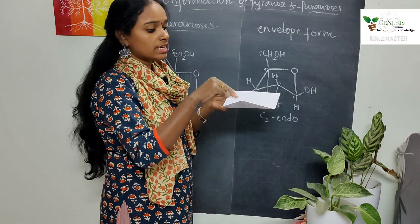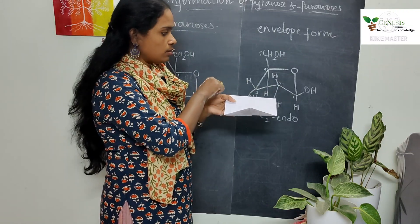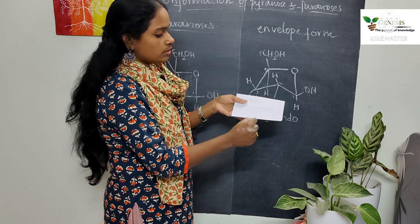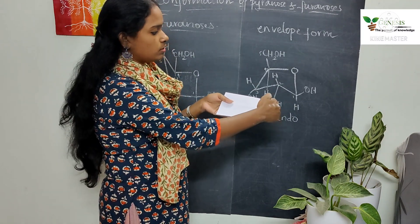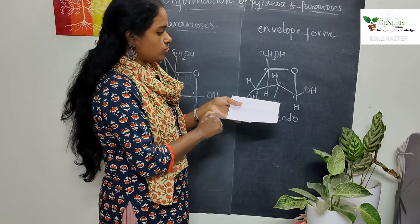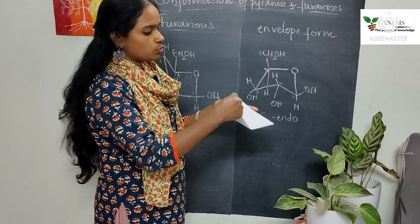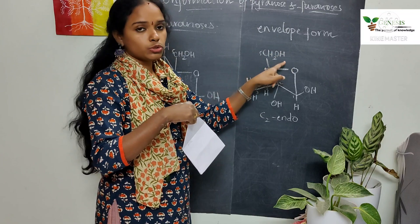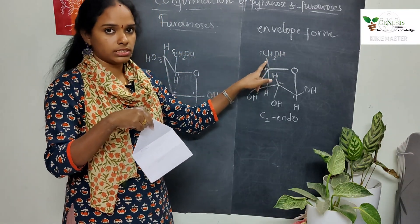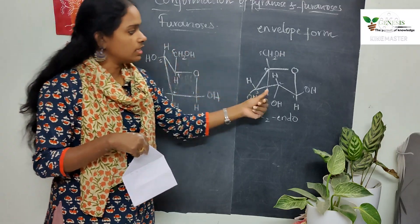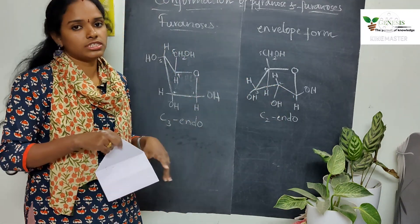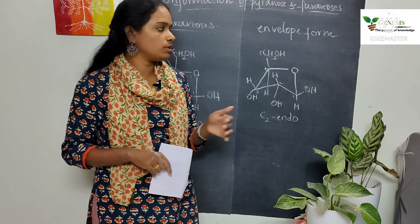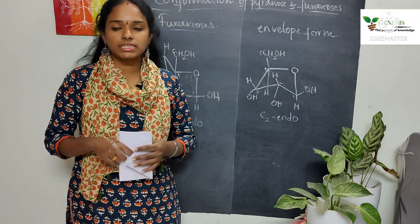In the C2-endo structure the puckered carbon is C2, with oxygen, C1, C2, C3, and C4 in the ring — where C2 is raised within the plane of CH₂OH. In both C3-endo and C2-endo cases the puckered carbon is toward the CH₂OH group. Because these structures resemble an envelope, they are called envelope conformations. Most ribose molecules exist in either C2-endo or C3-endo form.